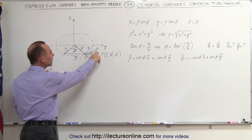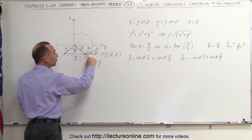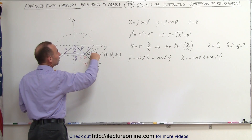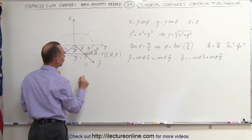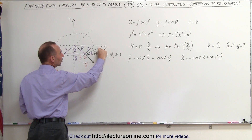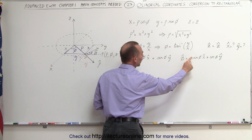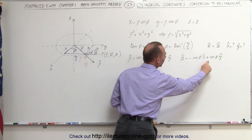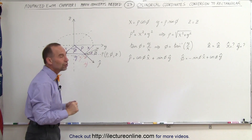We can do the same for the phi unit vector. The phi unit vector is parallel to the circle, which means there's a 90-degree angle between the rho and the phi unit vectors. Notice that in this example the x component is in the negative direction and the y component is in the positive direction. If this angle is phi, then the x component is opposite to the angle and the y component is adjacent, which means the phi unit vector equals negative sine of phi times x-hat plus positive cosine of phi times y-hat. When we add those two together we get the phi unit vector.